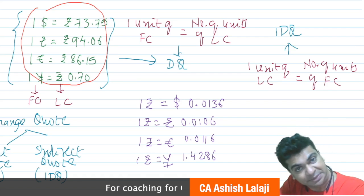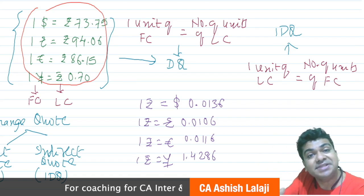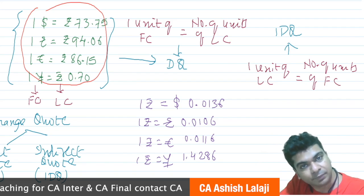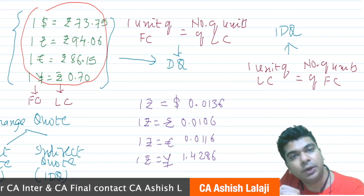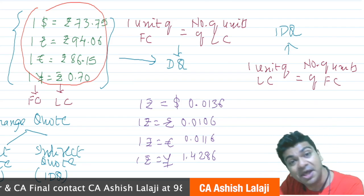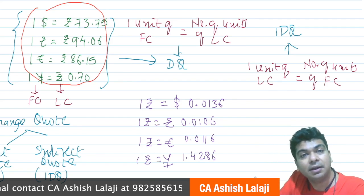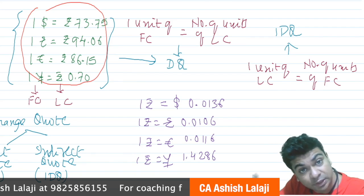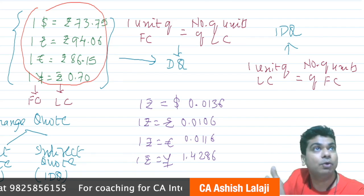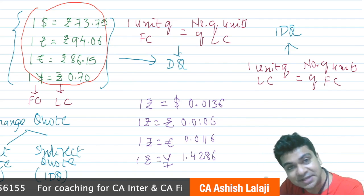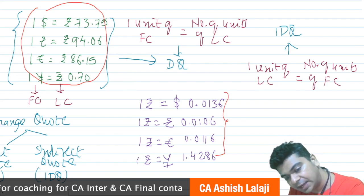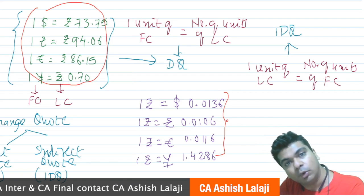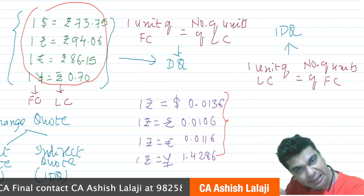Since our currency is weak against international currencies, expressing it in decimals would be confusing. If someone asks you the exchange rate between the Indian rupee and the dollar, you'd say around 70 or 72 rupees — no one says it's '0.0 something.' These indirect quotations are not allowed in India, and that is why we are habituated with direct quotations. The quotations we get from Indian banks will always be direct quotations.